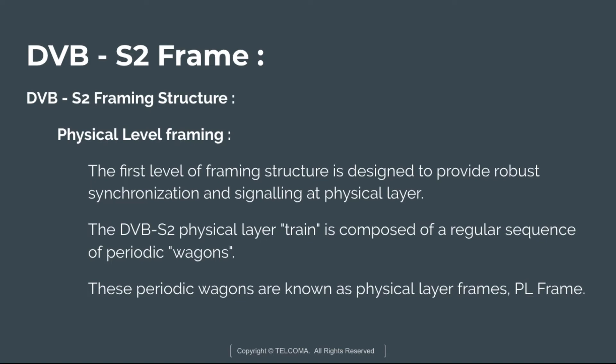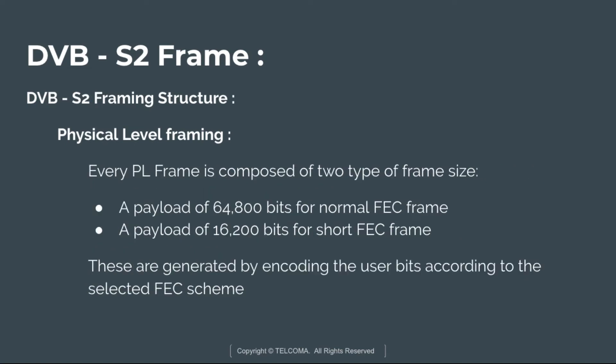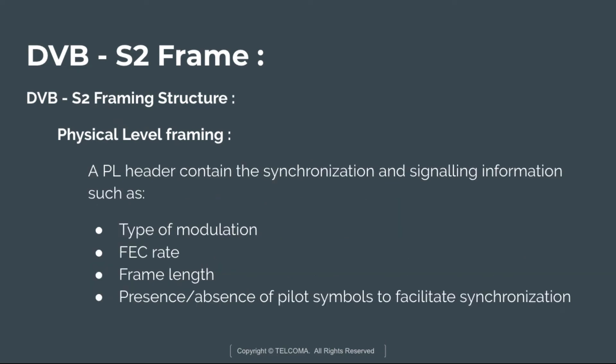The PL framing structure is application-independent; it may contain constant coding and modulation or variable coding and modulation. Every PL frame is composed of two types of frame size: a payload of 64,800 bits for the normal FEC frame, or a payload of 16,200 bits for the short FEC frame. These are generated by encoding the user bits according to the selected FEC scheme.